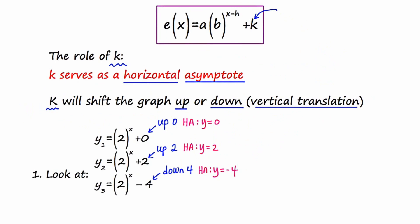On the third slide, using the general template for any exponential function, we're going to focus on the role of k. k serves as the horizontal asymptote — it reveals the position of the horizontal asymptote. So if there's a plus 3 at the end, we say there is a horizontal asymptote at y equals 3. If it were negative 7, the HA is at y equals negative 7. If there's no number at the end at all, the HA is at y equals 0. This value k shifts the entire exponential curve up or down — a vertical translation.